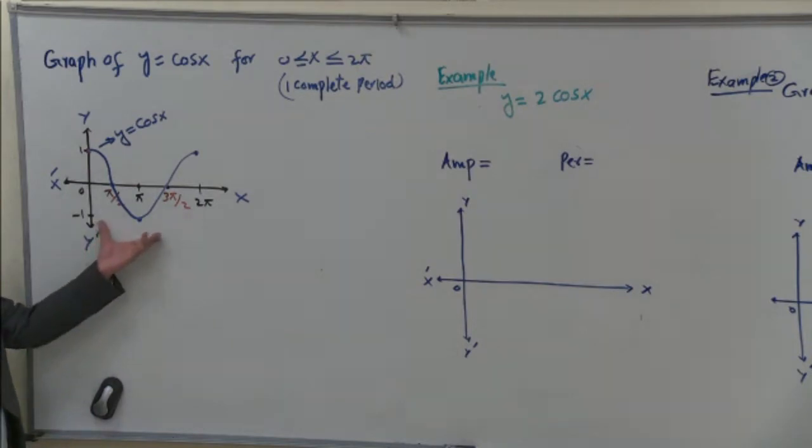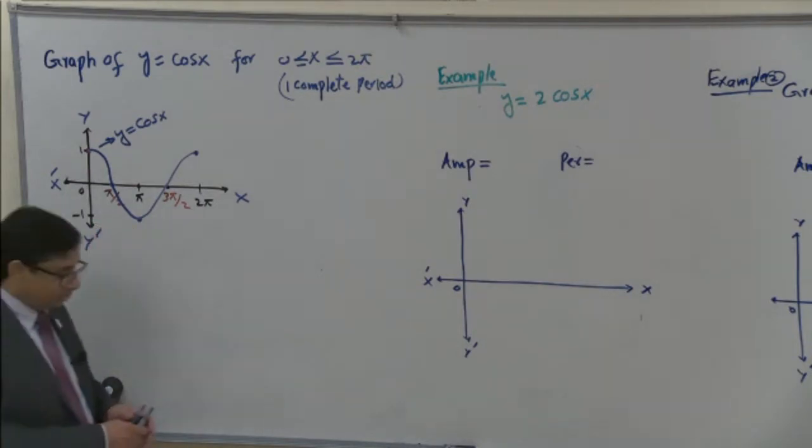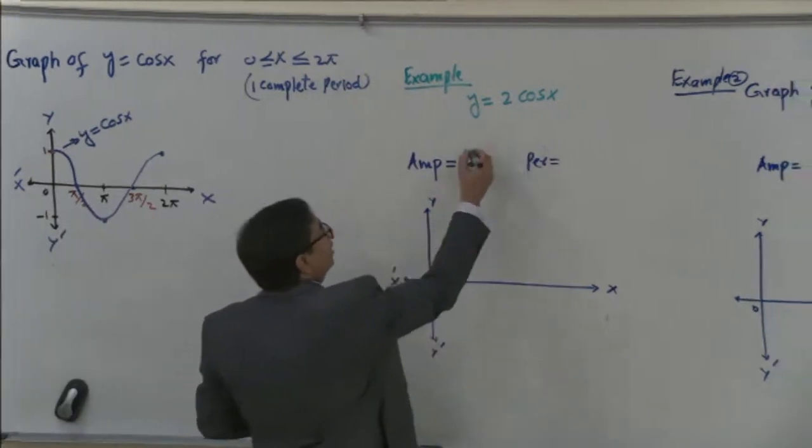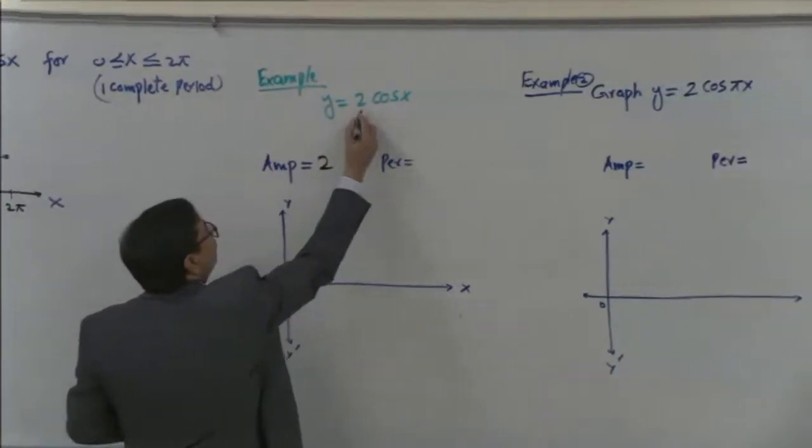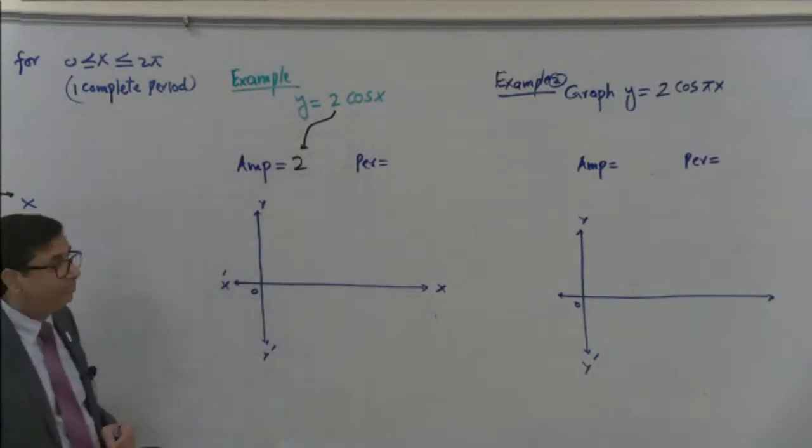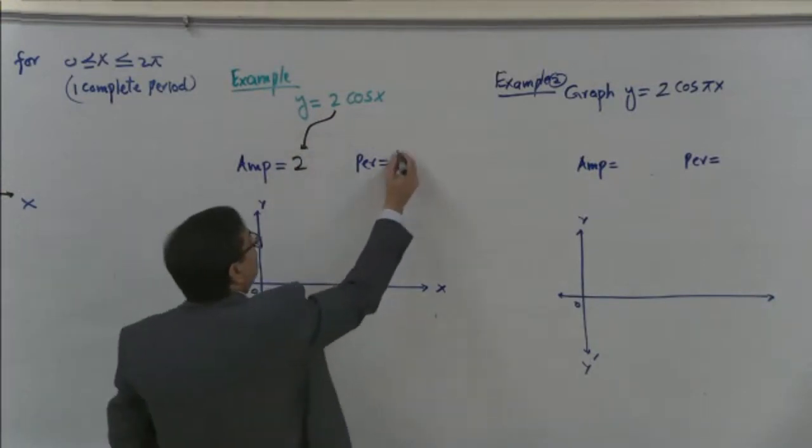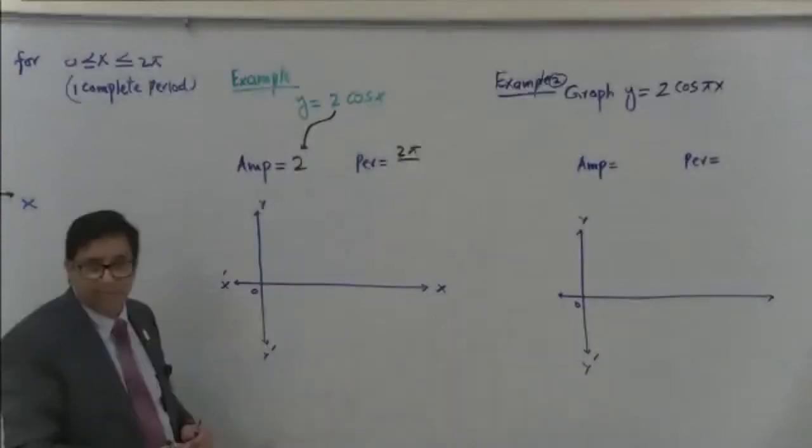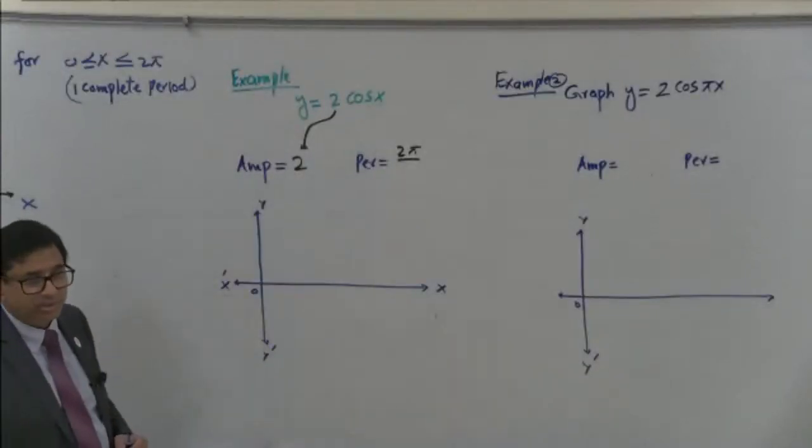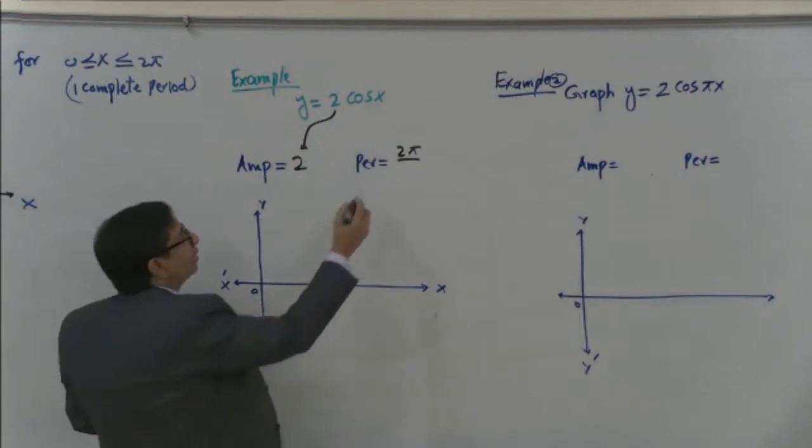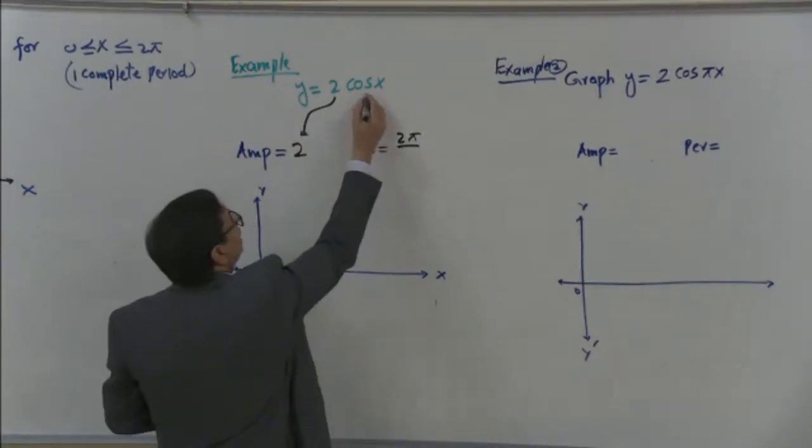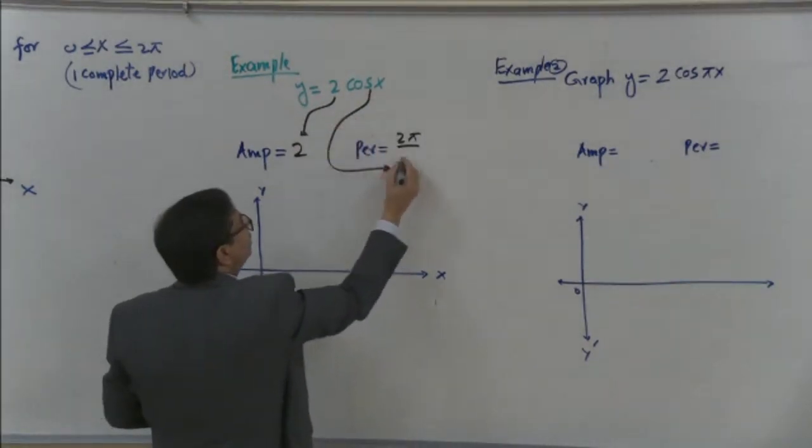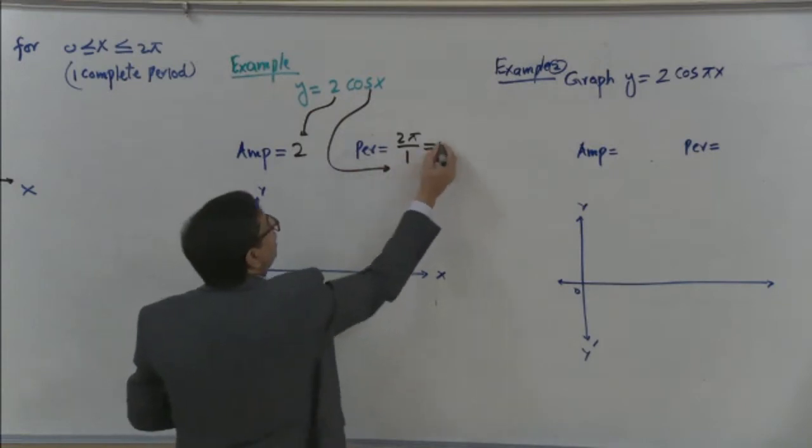So this we will be using in each case. Let's try this one. The amplitude, the number before the function is written always amplitude. And period. What is the period for cosine function? The same which is for sine, 2π. So we write here 2π, and coefficient of this is given 1, so divided by 1. So this becomes 2π.